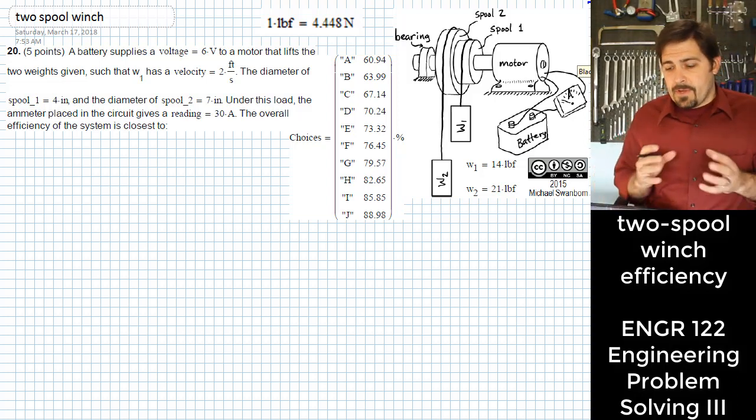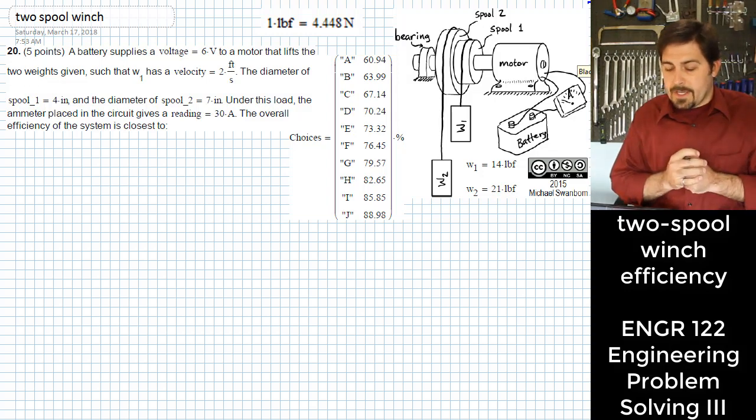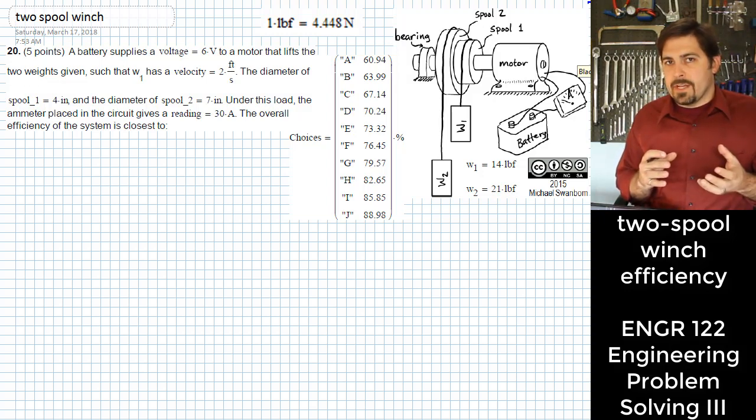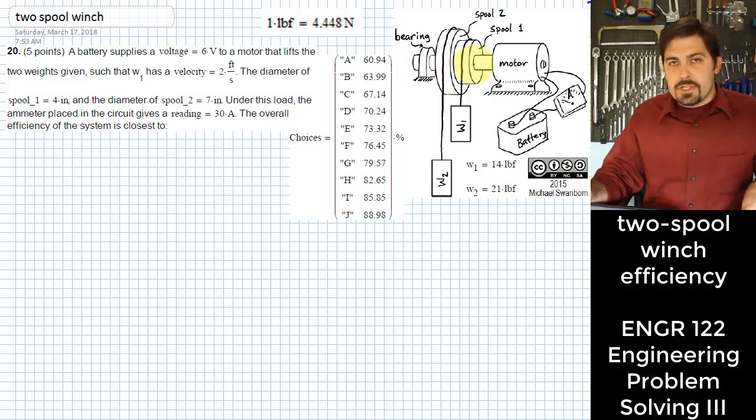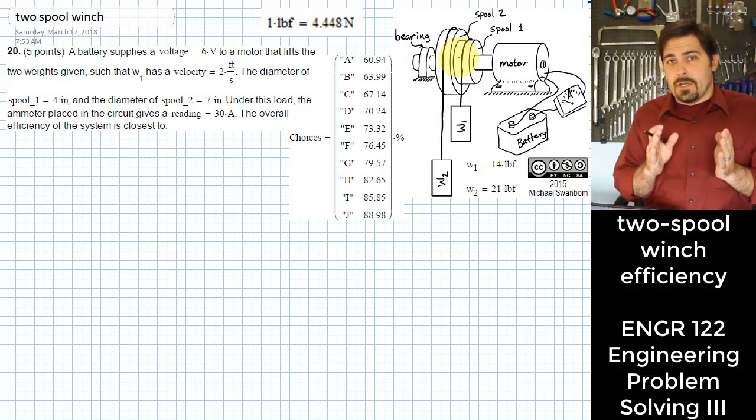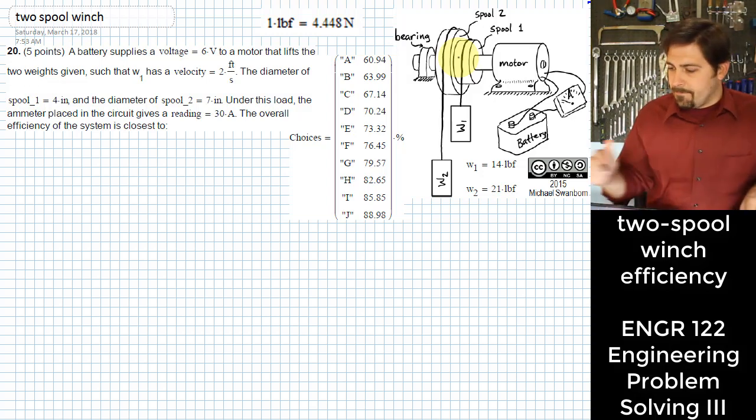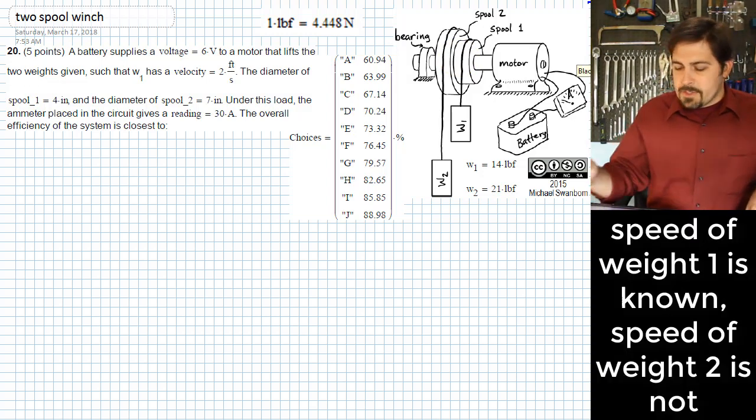In this problem, we have a motor that is being delivered electricity at a specified voltage and current, and we know how fast that motor is lifting one of the weights that's attached to two different spools on its shaft. Given this information, what we need to figure out is the overall efficiency of this system.